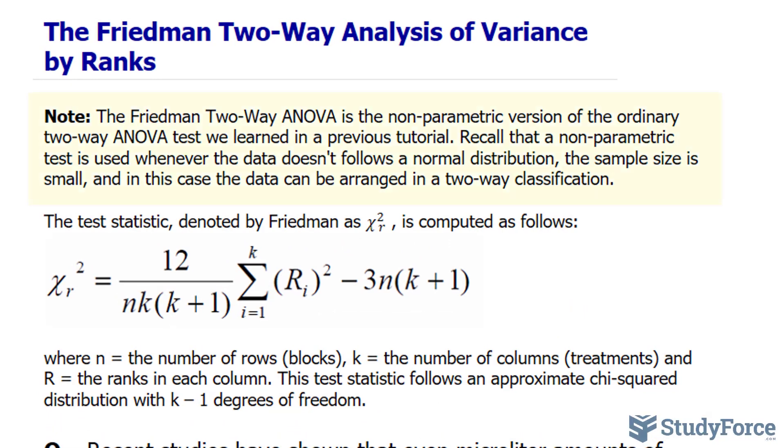The Friedman two-way ANOVA is the non-parametric version of the ordinary two-way ANOVA test we learned in a previous tutorial. Recall that a non-parametric test is used whenever the data doesn't follow a normal distribution, the sample size is small, and in this case, the data can be arranged in a two-way classification.